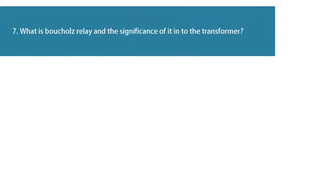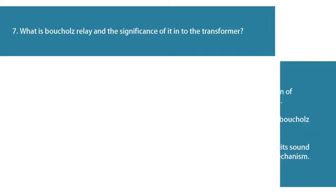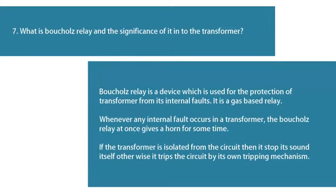Question 7: What is the Buchholz relay and its significance in a transformer? The Buchholz relay is a device used for the protection of a transformer from its internal faults. It is a gas-based relay. Whenever any internal fault occurs in a transformer, the Buchholz relay at once gives a horn for some time. If the transformer is isolated from the circuit, it stops its sound; otherwise it trips the circuit by its own tripping mechanism.